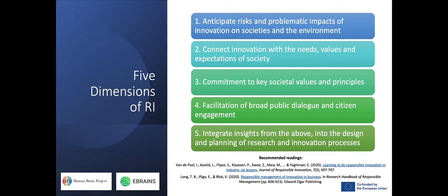In the next few minutes, I would like to introduce five key dimensions of responsible innovation. I have focused on these because they are especially important in the context of this module, which aims to provide an understanding of stakeholder engagement — an important part of responsible innovation — and how engagement with different stakeholders can be achieved in practice and how insights from stakeholder engagement can really be implemented into the planning of innovation processes. The first dimension is to anticipate risks and problematic impacts of innovation on societies and the environment.